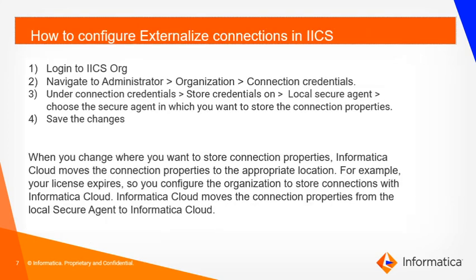How to configure externalized connections in IACS? It is pretty simple. To do this, login to your IACS org with admin credentials. Navigate to Administrator Console, Organizations, Connection Credentials. Under Connection Credentials, you will find this option: Store Credentials On. Under Local Secure Agent, choose the secure agent in which you want to store the connection properties. Save the changes made. When you change where you want to store connection properties, Informatica Cloud moves the connection properties to the appropriate location.